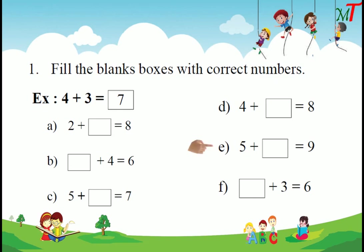Next one: 5 plus dash equals 9. First, 5 means 5 dots. After we add some more dots up to 9: 6, 7, 8, and 9. How many dots did we add? 4. So 5 plus 4 equals 9.